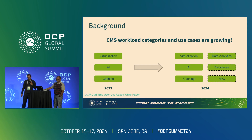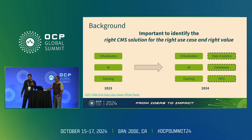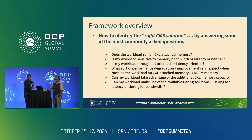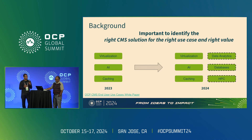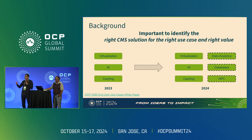What that meant was we need to figure out what sort of CMS solution actually works for that specific use case. It's important to identify that just connecting a CXL device is not enough — one solution will not work for all workloads. We wanted to come up with some way of identifying the right CMS solution for the right use case, and more importantly, the right value. We actually want production deployments and we want to see the ROI and TCO benefit for whatever CMS solution goes into production.